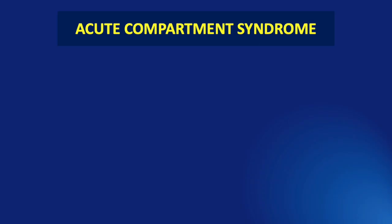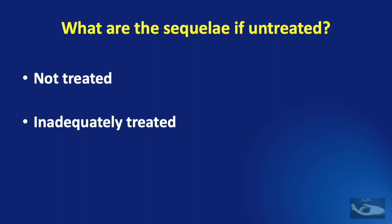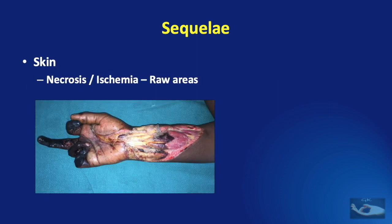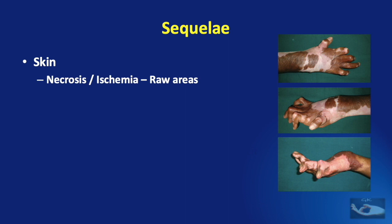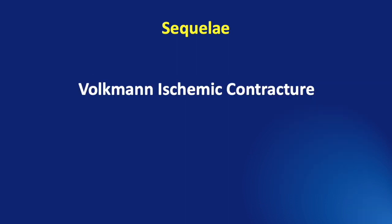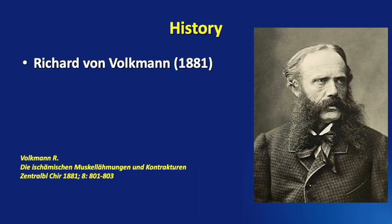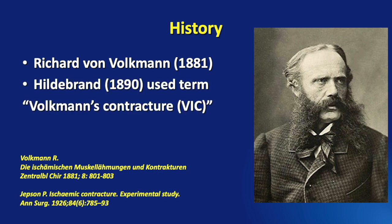When there is an acute compartment syndrome, it must be treated correctly and at the correct time and must be followed up diligently. What would the sequelae have been if it had been untreated — either not treated or inadequately treated? Along with gangrene of the fingers, there may have been necrosis or ischemia of the skin resulting in raw areas and secondary healing, as shown in this patient, or the condition called Volkmann's ischemic contracture. This condition was first described by Richard von Volkmann in 1881, but the term Volkmann's contracture was given by Hildebrand in 1890.